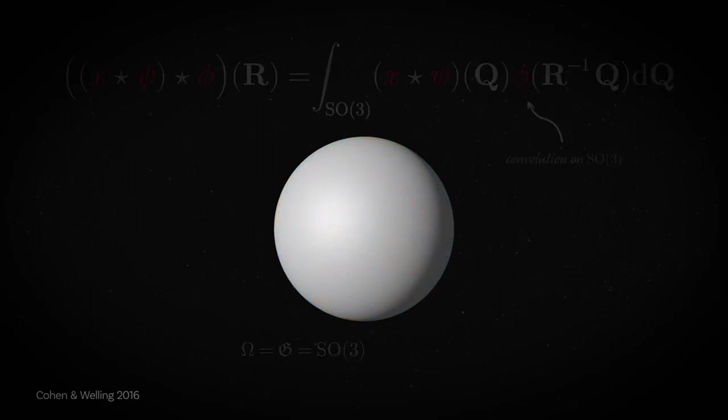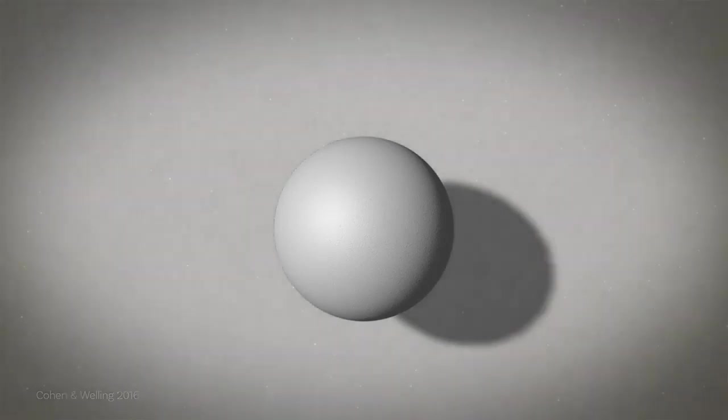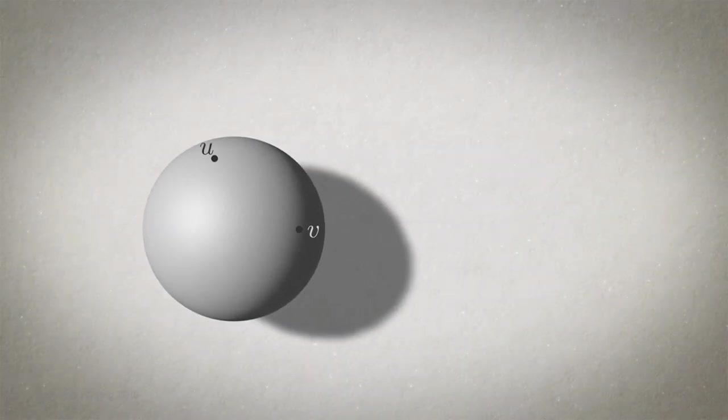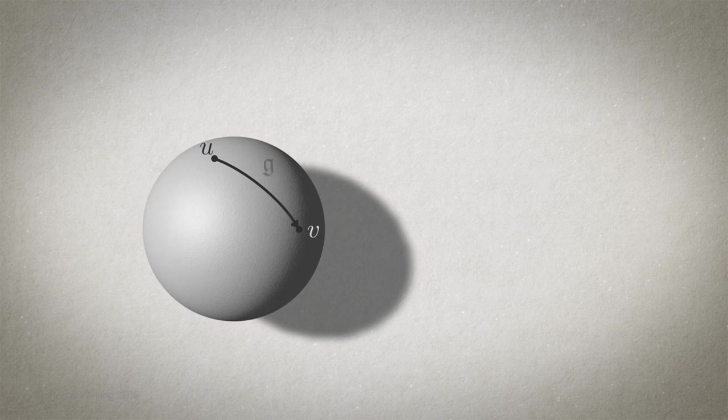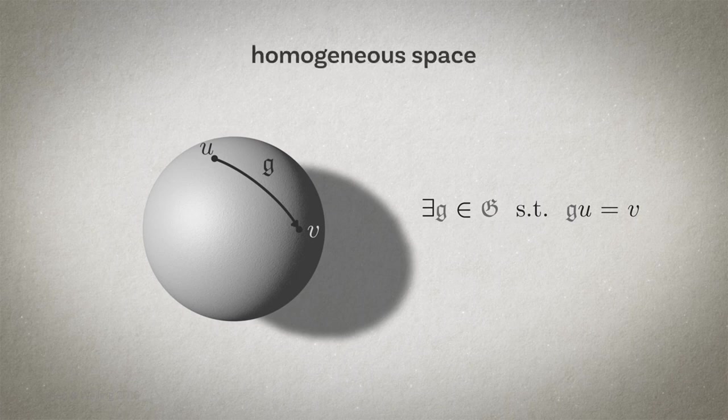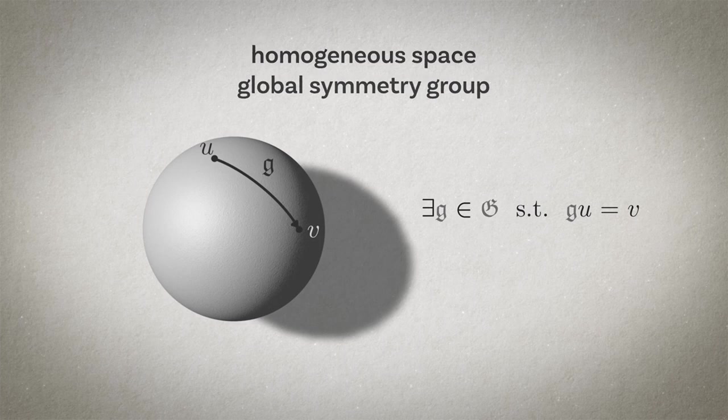The sphere in this example is a non-Euclidean space, a manifold, but it is quite special. Every point on the sphere can be transformed into another point by an element of the symmetry group of rotations. So in a sense there is complete democracy among the points. In geometry we call such spaces homogeneous, and their key feature is a global symmetry structure. This global symmetry structure doesn't obviously hold for general manifolds.